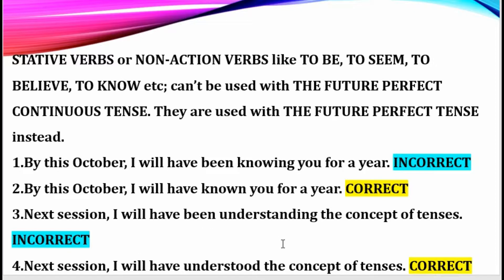'Next session, I will have been understanding the concept of tenses.' This is also incorrect — a crazy sentence. 'Understanding' is the activity done by your brain, so it is a stative verb, a verb of perception. It doesn't carry -ing; it's not an action verb. The correct way is: 'Next session, I will have understood the concept of tenses.'